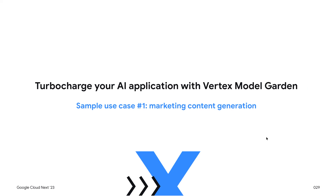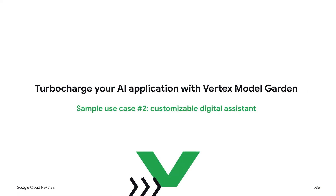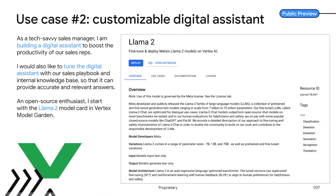I chose to do one live demo; everything else on slides — this happens. For this one, let's talk about a digital assistant. Let's decide that we're going to start with Meta's Llama 2, now available in Model Garden as we said before. You can open up that model card to learn more about it.